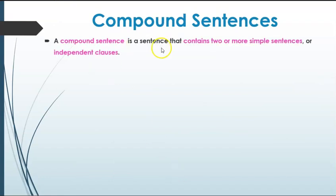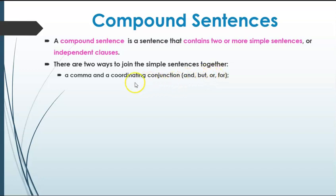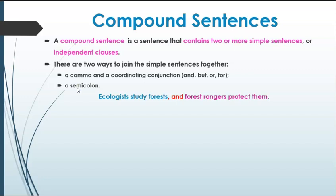A compound sentence is different. A compound sentence contains two or more simple sentences, or independent clauses — at least two independent clauses, and sometimes more. There are two ways to join them together. First, you can add a comma and a coordinating conjunction. Coordinating conjunctions are: and, but, or, for, so, nor, and yet. You can't use just a comma or just a conjunction — you have to use both. Or you can use a semicolon, which we typically use only when the two ideas are very closely related.